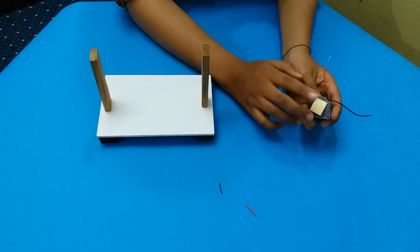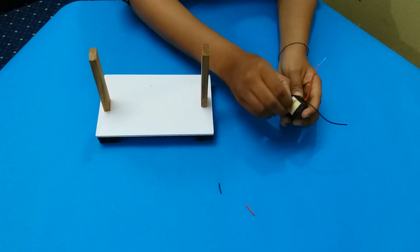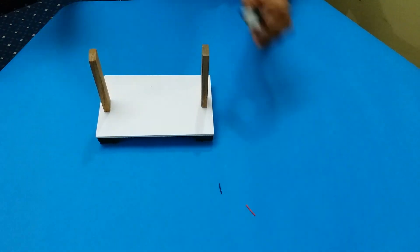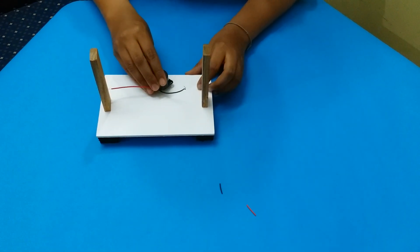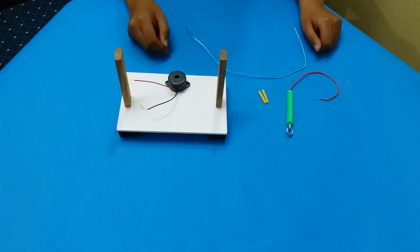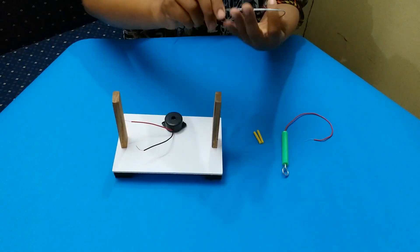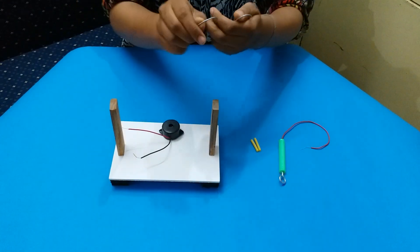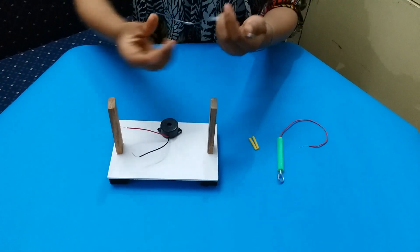You have a both side tape given on the bottom side of the buzzer. Remove the release paper and fix the buzzer on the sunboard. Take the steel wire, give it the shape that you want by bending it.